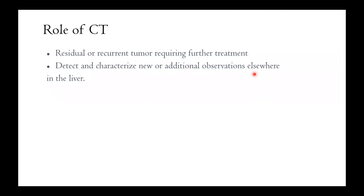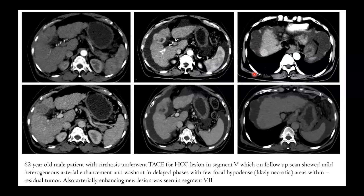The role of CT is to look at residual and recurrent tumors and detect any new lesions. Here we can see a 62-year-old male patient with cirrhosis who underwent TACE for this lesion. On post-TACE CT, there is still an arterially enhancing component, washout on portal venous phase, and necrotic hypodense areas within. There is also evidence of a new arterially enhancing lesion in segment 7.